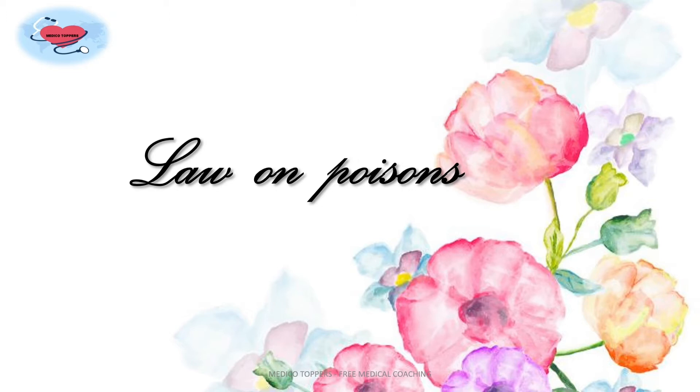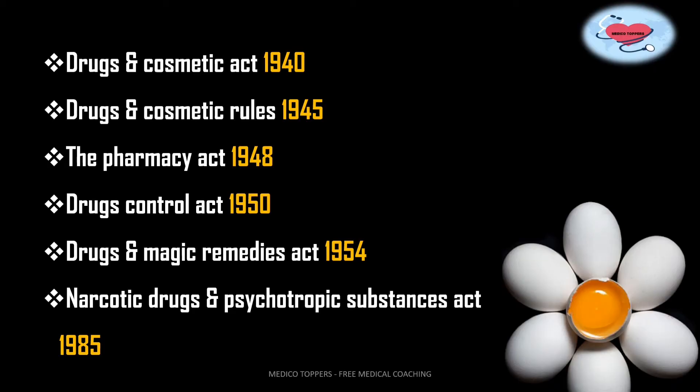Now coming towards Law on Poisons. The first law is the Drugs and Cosmetic Act, year 1940. It regulates the import, manufacture, distribution and sale of all kinds of drugs. The main feature is control of quality, purity and strength of the drug. The year 1940 is the most important thing to remember here. So Drugs and Cosmetic Act, year 1940.